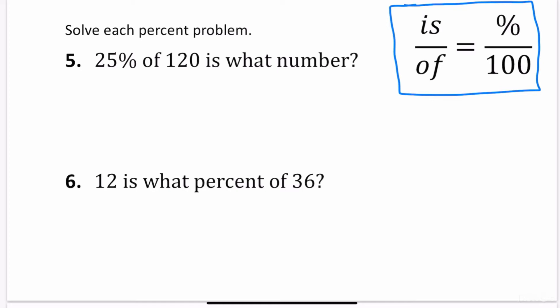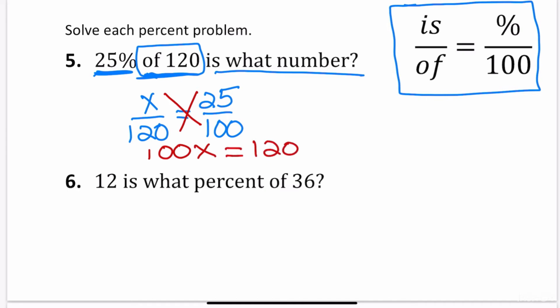25% of 120, 25% of 120 is what number? So I'm going to go ahead and fill in is over of equals percent over 100. The percent is 25%, so percent over 100. So it says 25% of 120. That means that the of goes in the bottom. That's 120. And is what number means I'm solving for some unknown value, which you can put as x. So how do I solve this? We are going to cross multiply because it is a proportion. So here we have 100x is equal to 120 times 25. If you take your calculator, 120 times 25 is equal to 3,000.